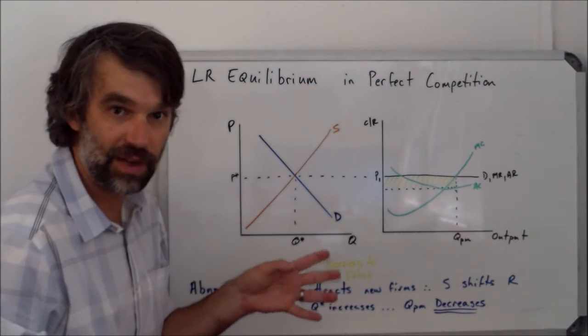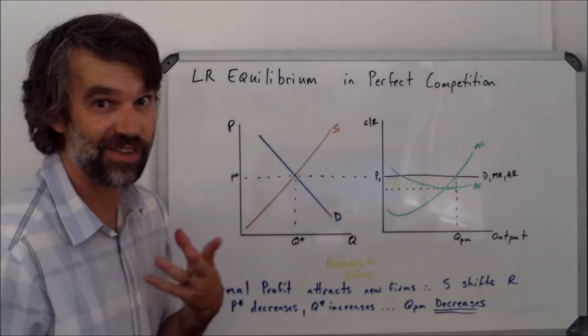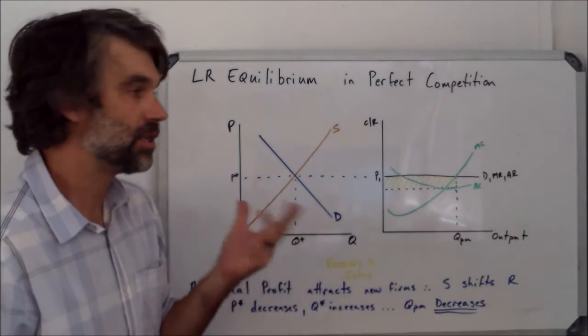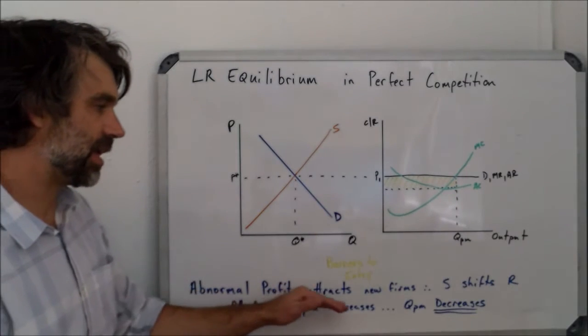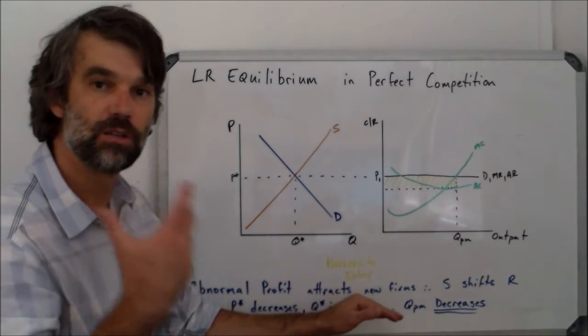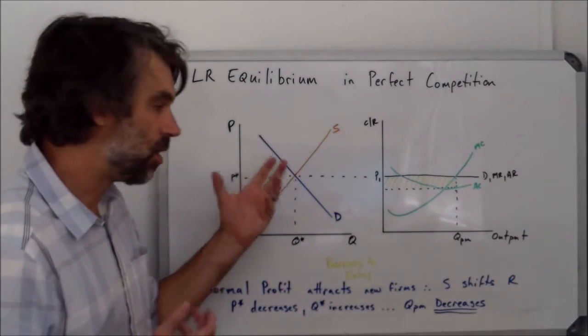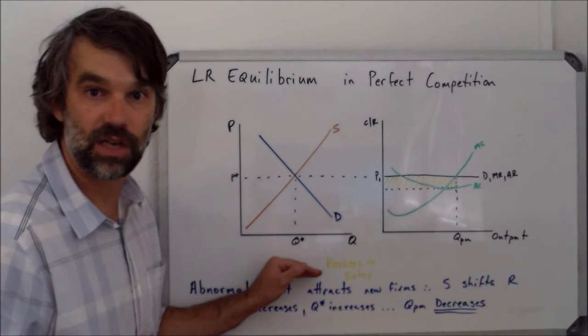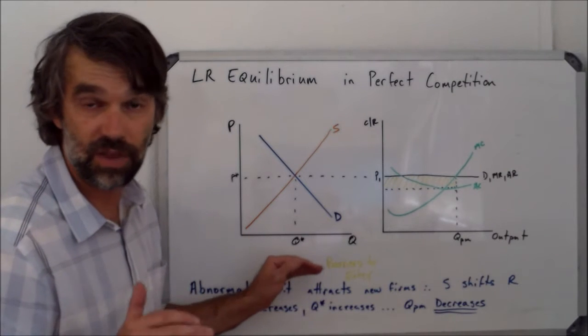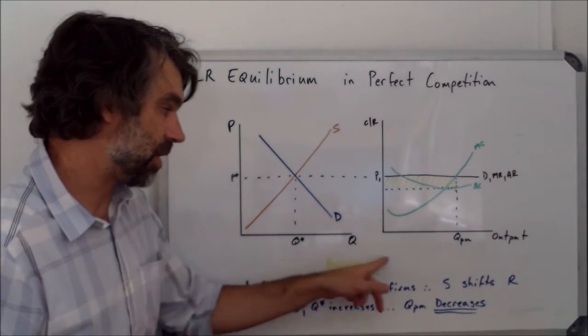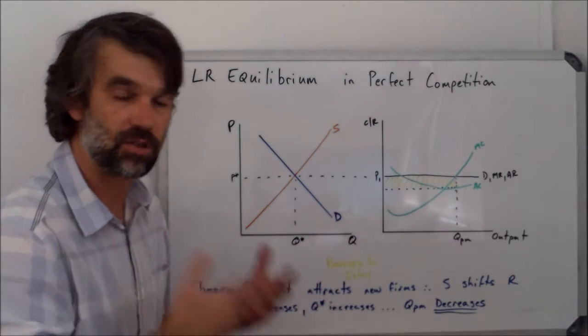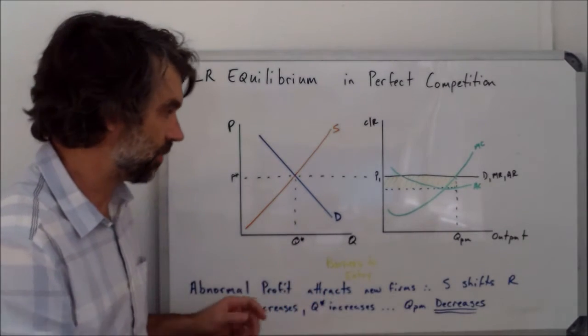Well, the thing about abnormal profit is, I like my normal profit, I like to be satisfied, but I like more than that a lot. So abnormal profit is going to attract new firms to the industry. Remember, part of our model of perfect competition is that barriers to entry are very few, if any at all. The point is that the barriers to entry don't keep firms from joining the industry. It's easy to join the industry.